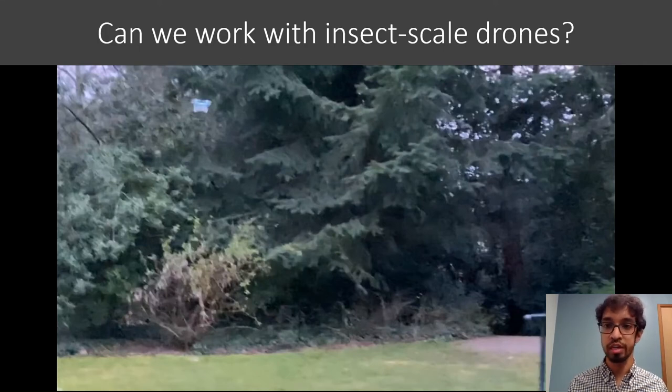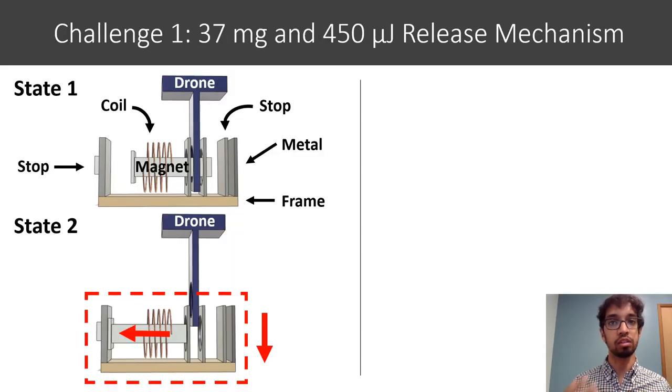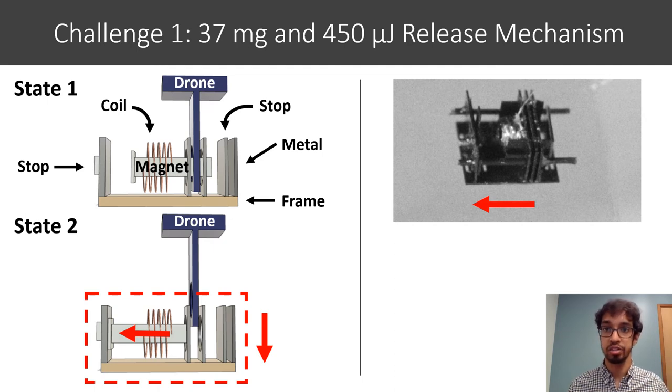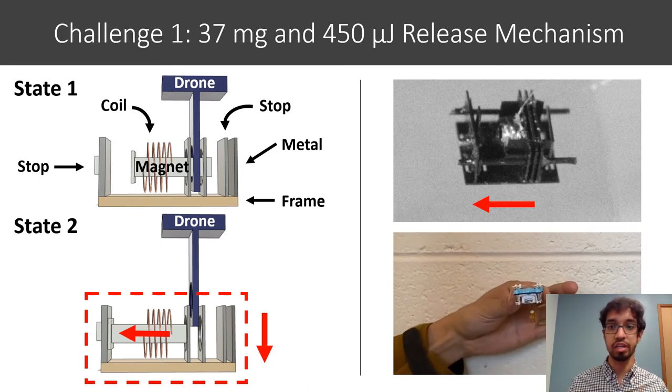Building this system requires addressing two key technical challenges, which I'll discuss in the next few slides. The first is we need a lightweight and low power release mechanism that keeps the sensor attached until it's time to drop it. Our design works by using a magnetic pin that moves between two states. In one state, it prevents the sensor from falling. And then in the other state, by applying a pulse of current to the coil of wire wrapped around the magnet, it moves to the left and allows the whole thing to fall freely. We also designed this mechanism to be robust and we can see that even when we shake it around, it won't fall unless we trigger it.